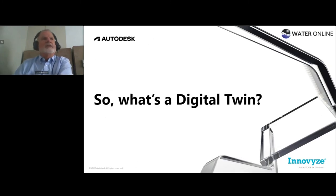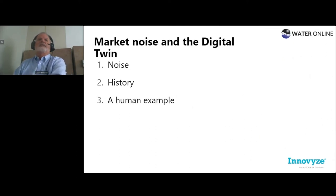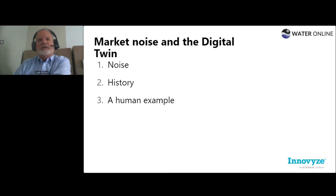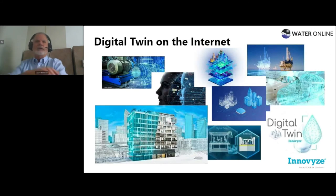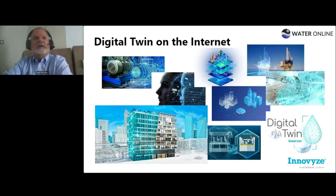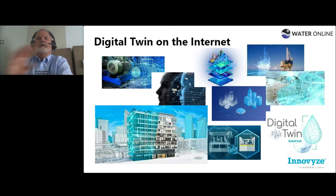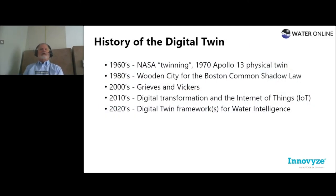So what's a digital twin? It kept popping up, and there's a lot of market noise out there. I want to cover a little bit about that and walk through the history that explains why digital twins exist. Digital twins are everywhere on the internet — from equipment to whole cities, oil rigs, airplanes, buildings. It really is a digital representation of real life. Twinning has been around for quite some time.